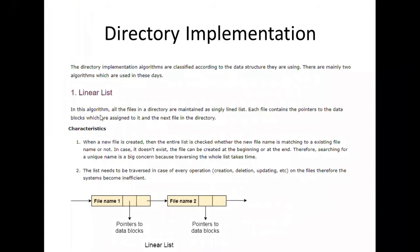In a linear list, all the files in the directory are maintained as a single linked list. Characteristics: when a file is created, then the entire list is checked whether the new file name is matching to an existing file name or not. If it is not existing, it will create a new file name. The list needs to be traversed in each and every operation. If you want to delete the third file, you have to go from first file to second file, then to third file and delete it. So it can be a problem with respect to creation and deletion operations.